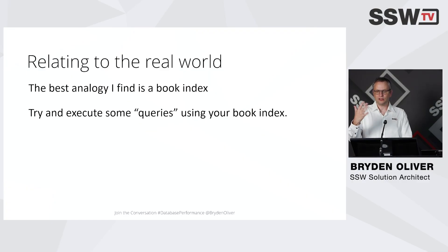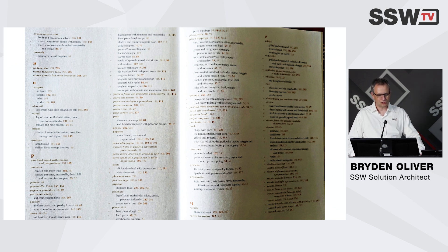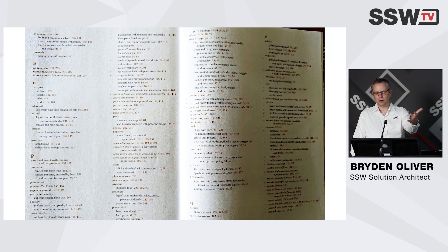When we're relating it to the real world, the obvious analogy is a book index. And that's in fact where the name 'index' comes from — they were trying to imitate a book index or a library index. Here's a page out of one of my relatively distant relatives, Jamie Oliver, and this is the index to one of his cookbooks. It's indexed by ingredient and then by recipe.